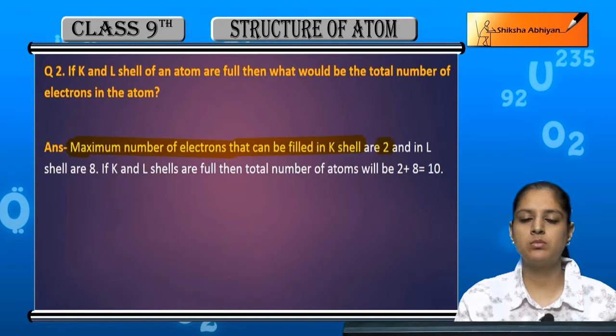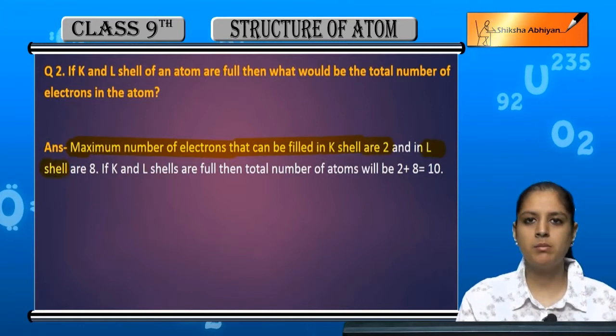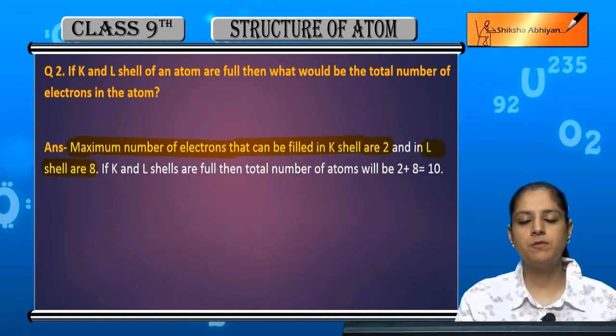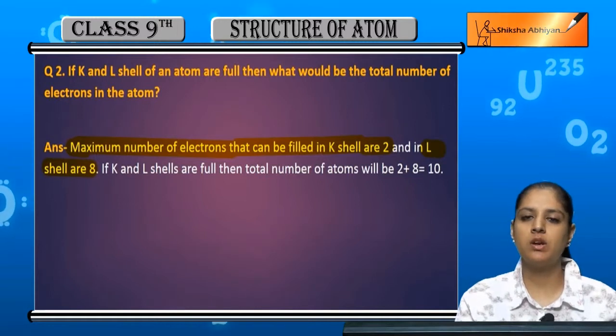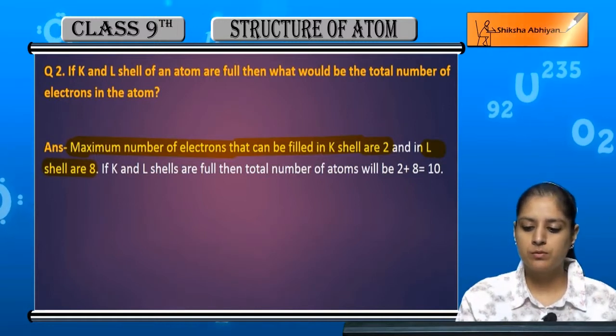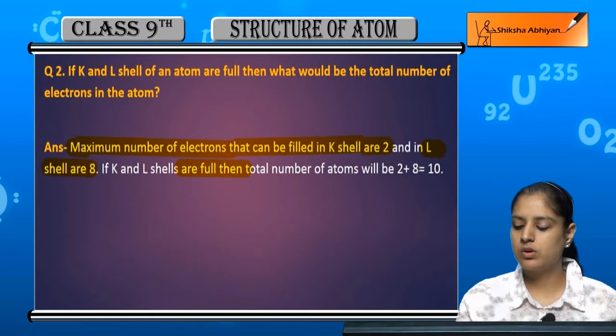K shell mein aa sakti maximum 2 aur L shell mein aa sakti maximum 8. So agar yeh completely filled hai iska matlab K mein 2 hai aur L mein 8 hai. To full hone ke wajah se total hoga hamare paas...